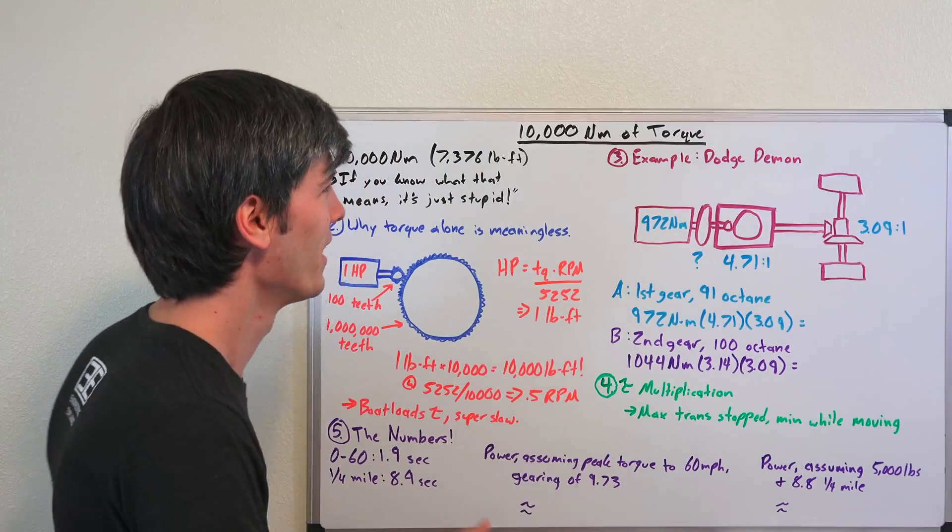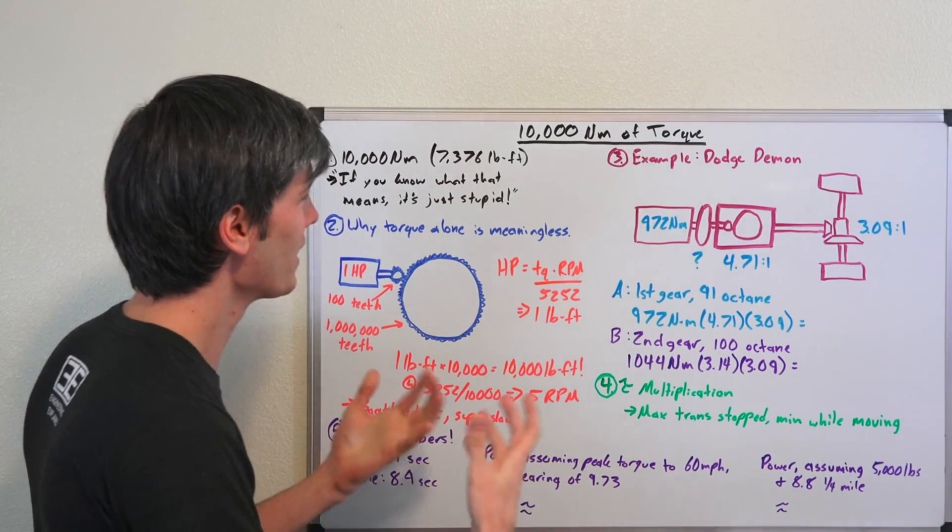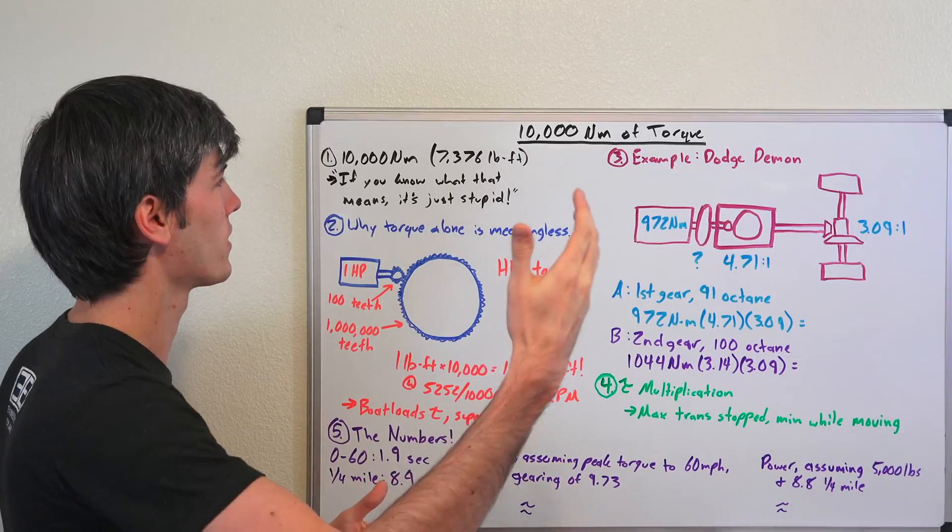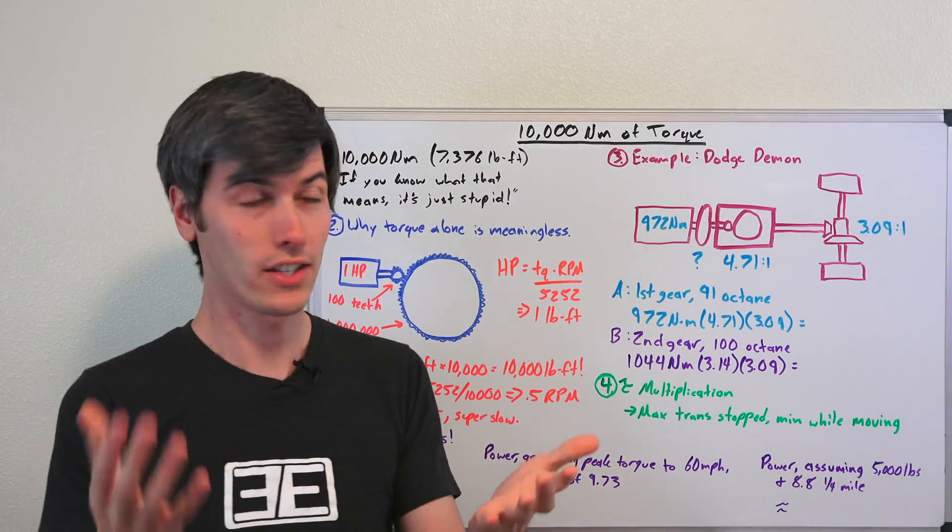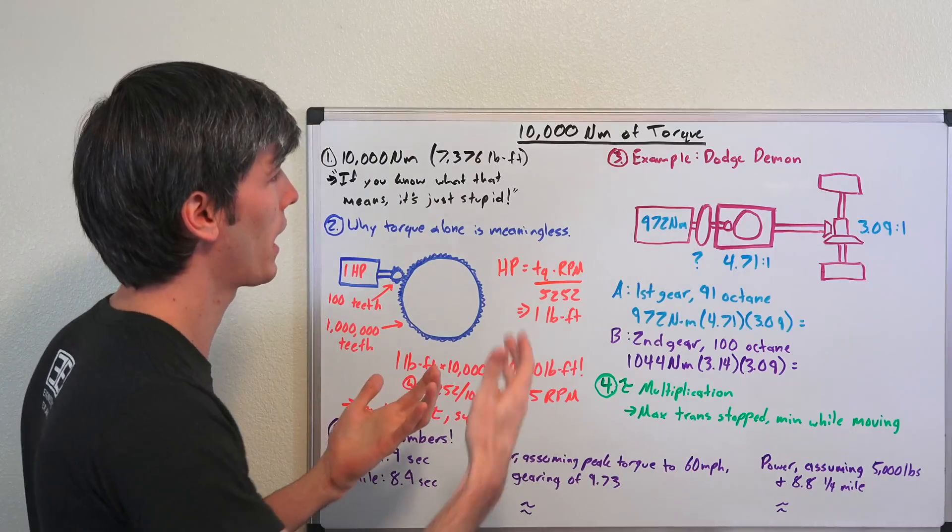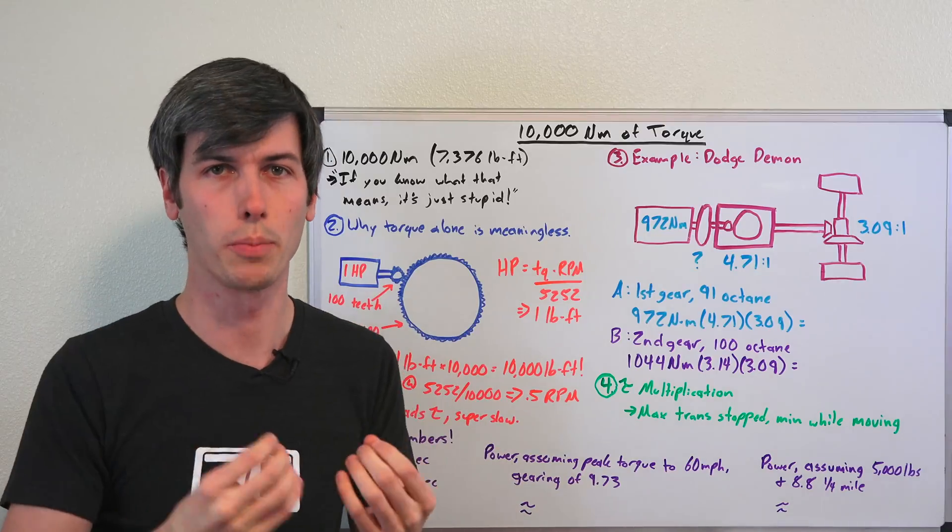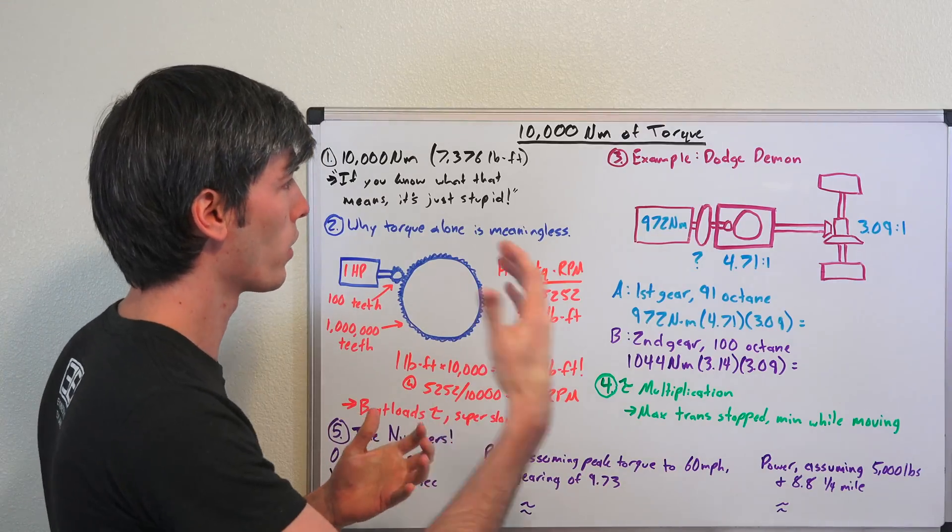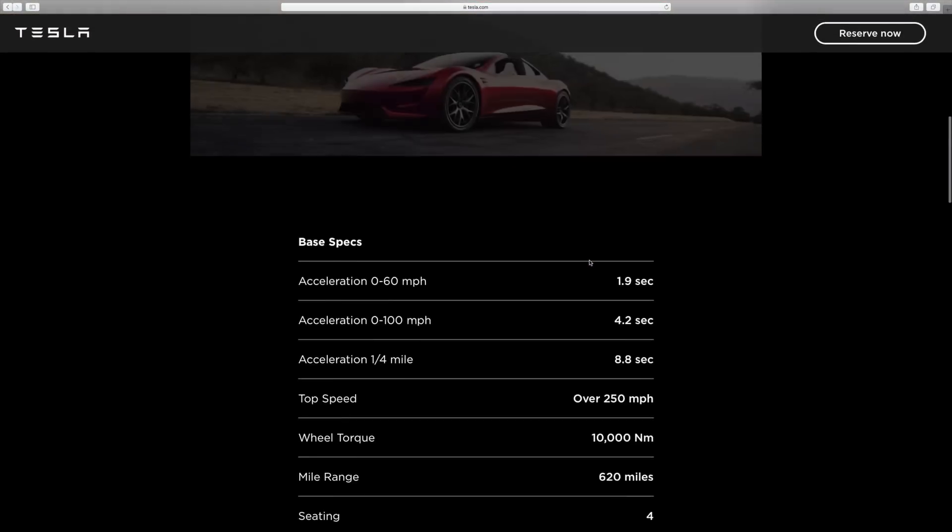Great, glad we've cleared that up. Now getting into this 10,000 newton meters of torque number. In the presentation Elon said if you know what this means, it's just stupid. And that's very accurate if a car were to have 10,000 newton meters of engine torque or motor torque, that is just stupid. It's magnitudes ahead of what is currently available on the market in production cars.